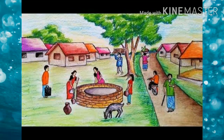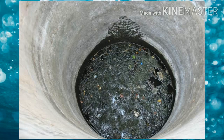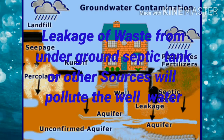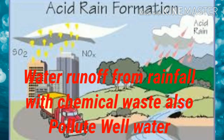Today I am going to discuss how well water becomes polluted. Leakage of waste from underground septic tanks or other sources will pollute the water. Water runoff from rainfall with mud and chemical waste also pollutes well water.